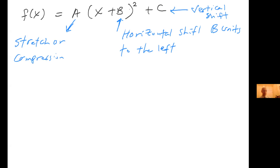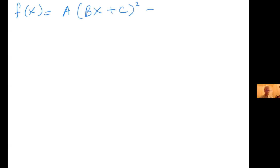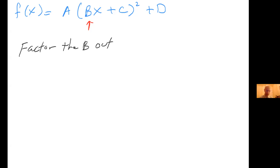What if there are even more numbers floating around, like f(x) = a(bx + c)² + d? Does that extra b inside make a difference? Yes. The easiest way to deal with it — it's the 21st century, so most of the time you'll graph on a calculator, but to truly understand it — is to factor the b out. Some teachers call this 'truncating' the function.